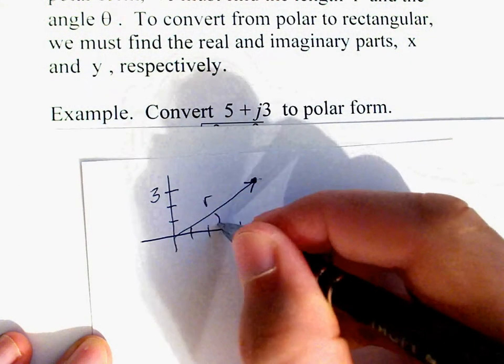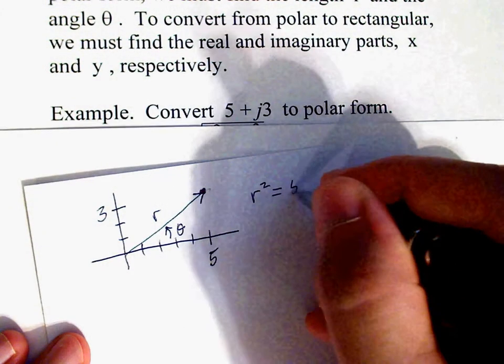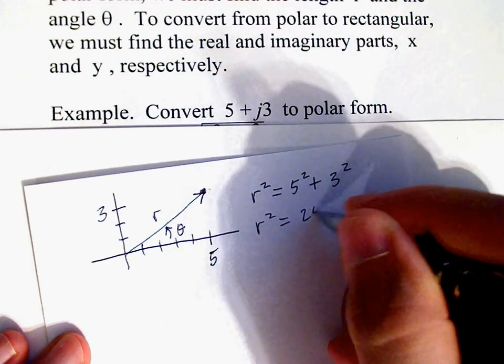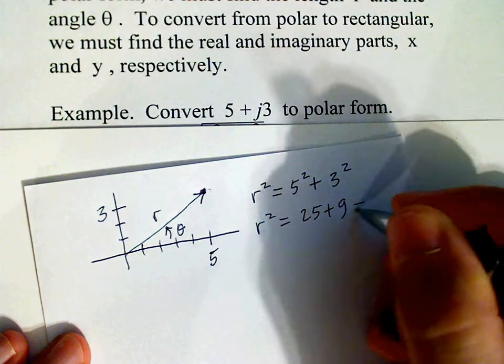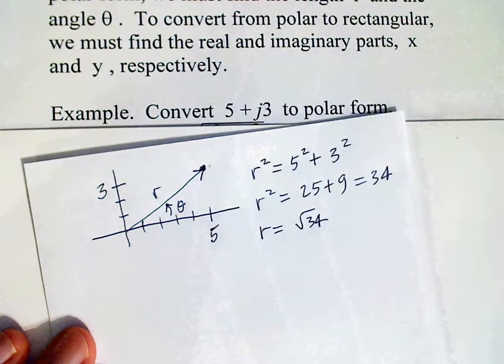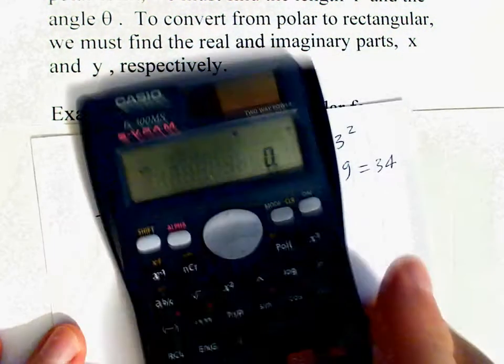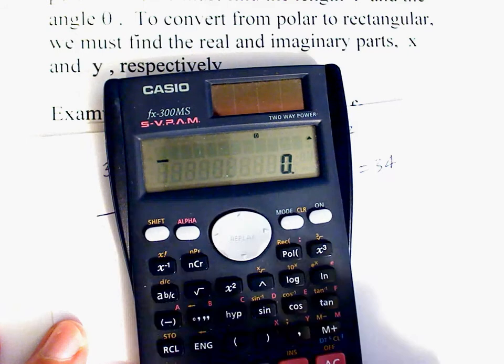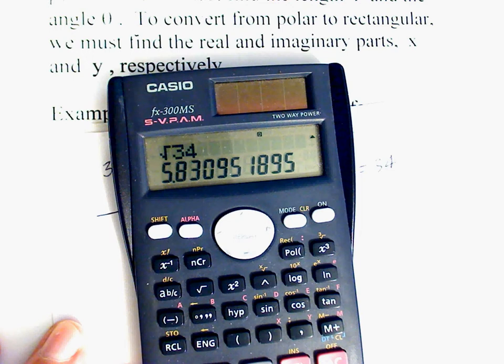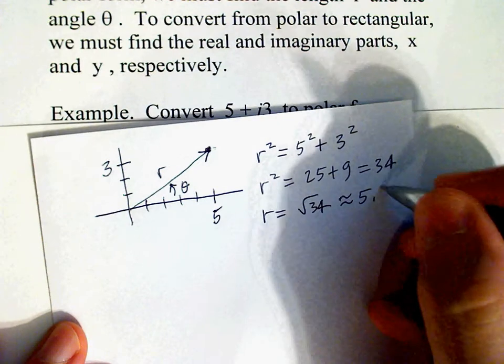We'd like to find length r and the angle θ. Again we know r² equals 5² plus 3². So r² is 25 plus 9 or 34. That means r equals √34. I don't happen to know what √34 is off hand so we'll find it on the calculator. √34 is approximately 5.83.